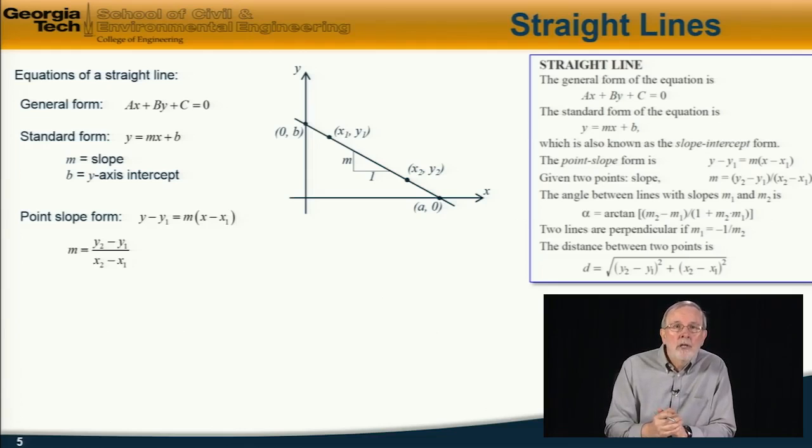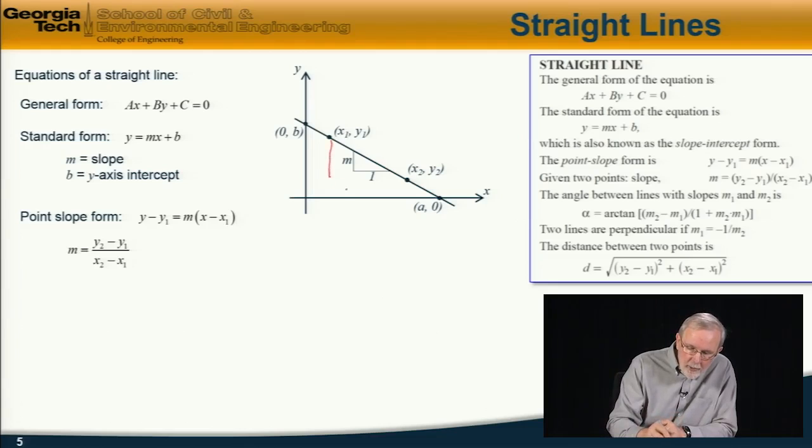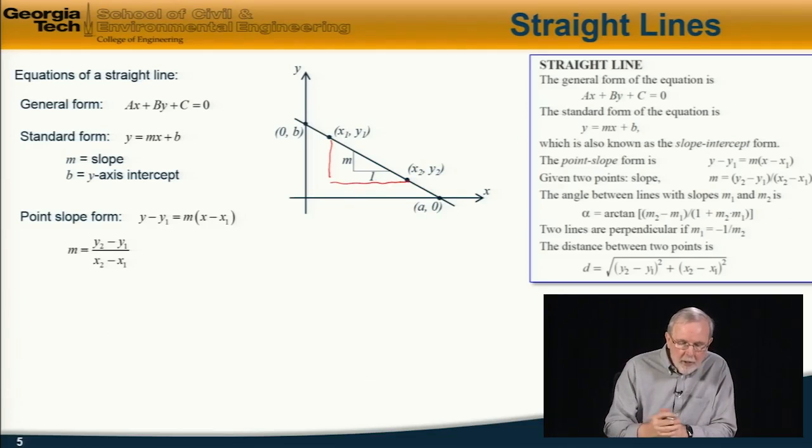And in addition, the slope of the line between those two points is simply equal to the height difference, which is (y2 - y1), divided by the horizontal distance (x2 - x1).